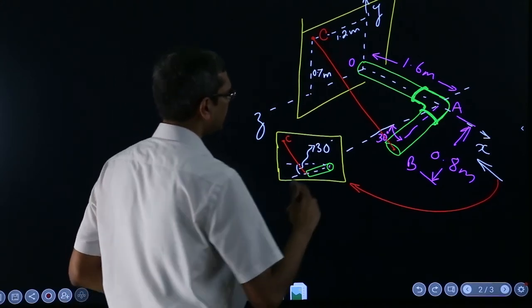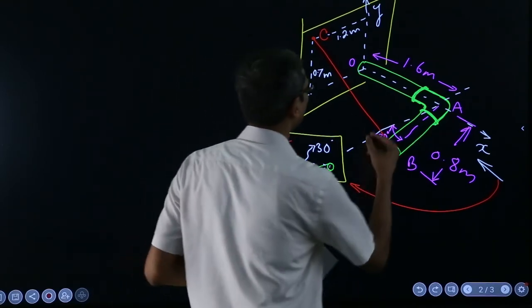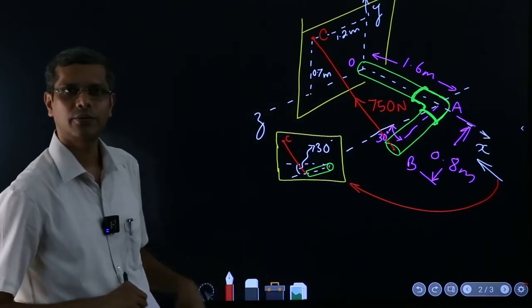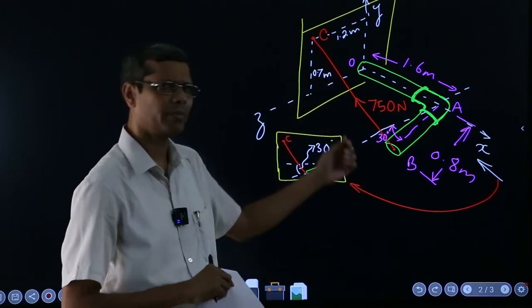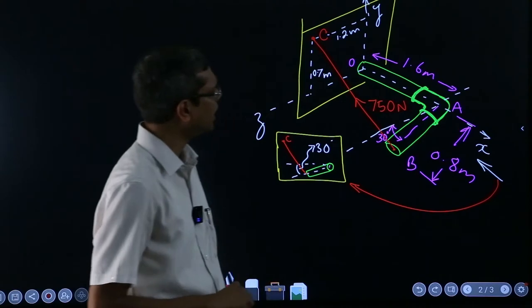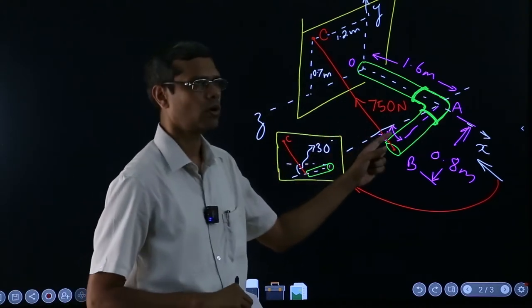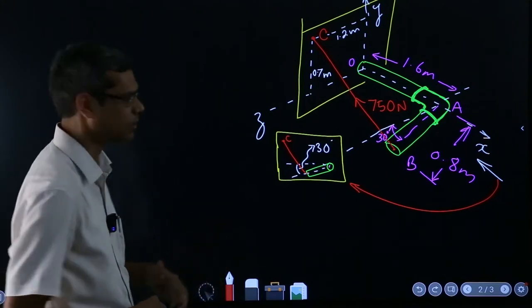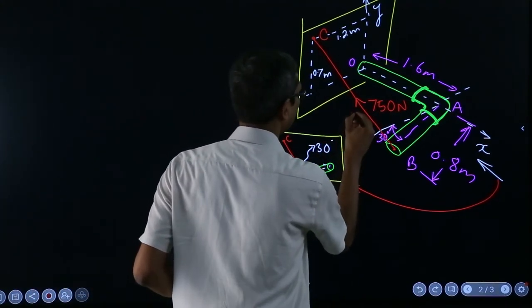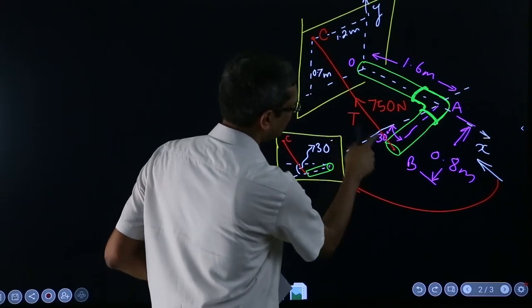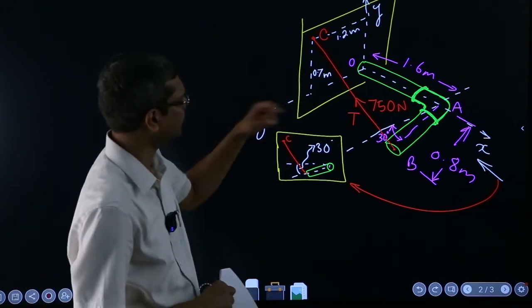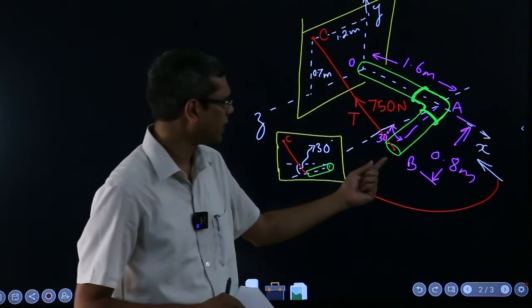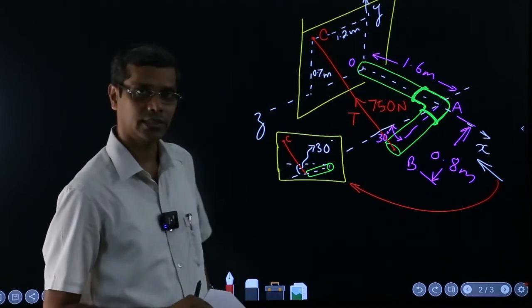It is also known that there is a force of 750 Newton acting there on this string. By some mechanism this tension has been developed and we are supposed to represent this force, shown here pictorially, as a mathematical entity as a vector. This tension we have to represent as a force acting on B. If it's the force acting on C, it will be exactly opposite, but we are asked to represent this as a force acting at B.